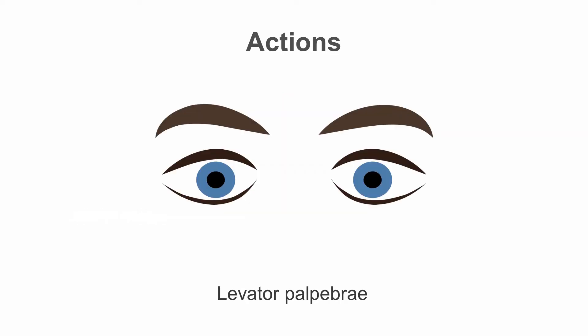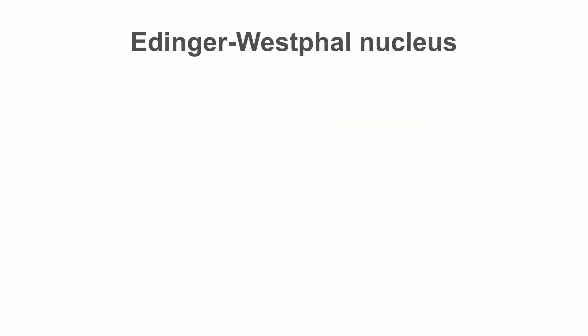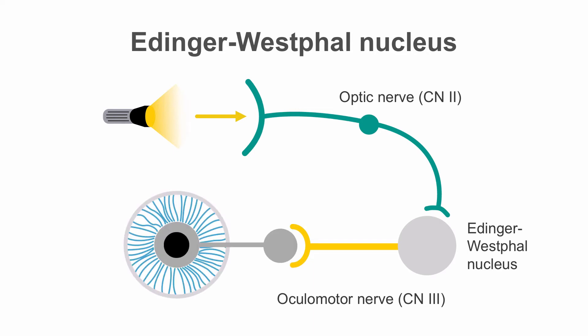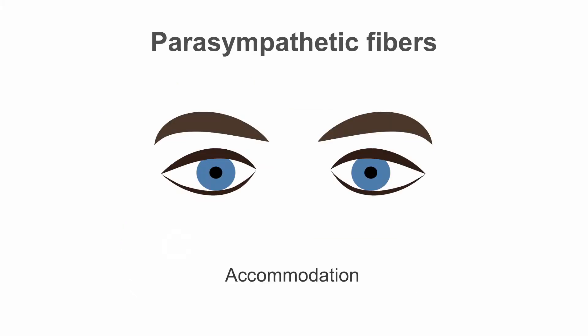Cranial nerve 3 also innervates the levator palpebrae, which raises the lid. The oculomotor nerve also carries parasympathetic fibers from the Edinger-Westphal nucleus, also in the midbrain, providing the efferent pathway for the pupillary reflex. We can test the pupillary reflex by shining a light in front of the patient's eyes. The afferent fibers from cranial nerve 2 carry sensory information, while the efferent parasympathetic fibers from cranial nerve 3 carry information back to the eye, causing constriction of the pupilloconstrictor muscle.